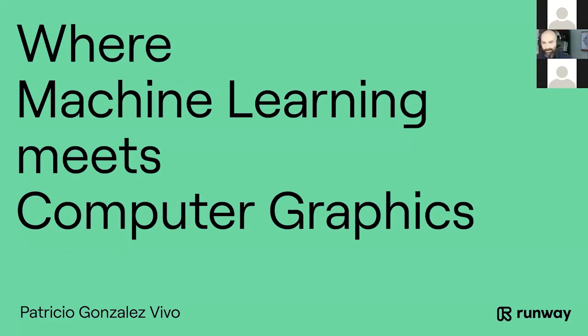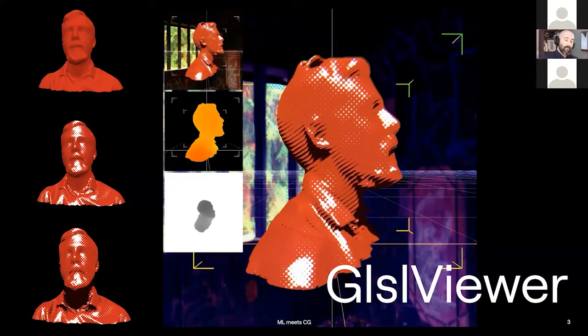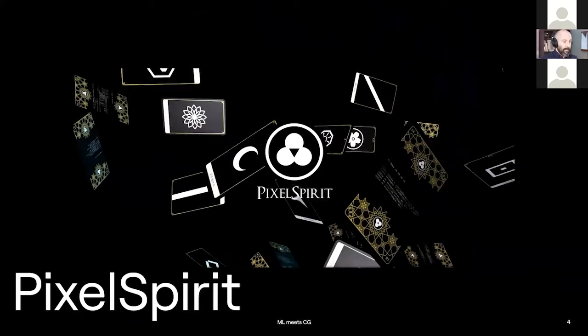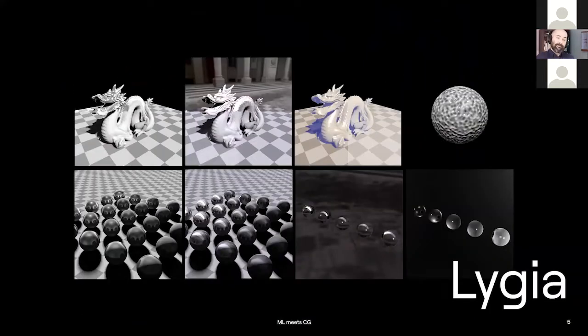I'm very happy to be here. I'm going to be talking about my current job at Runway, and my role is where ML meets computer graphics. A super brief introduction of me: my name is Patricio Celes Vivo. I'm an artist and I've also developed some tools — one of them is a viewer, Pixel Spirit, the Book of Shaders. And currently I'm having a great time working on Lygia, which is a library for shaders with a big repository of filters.